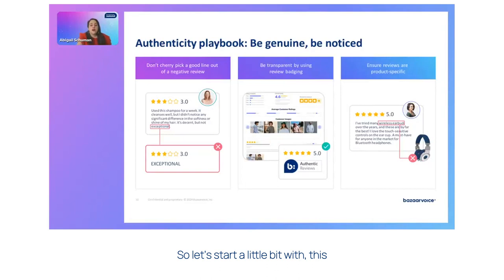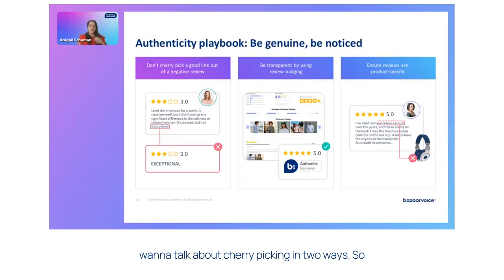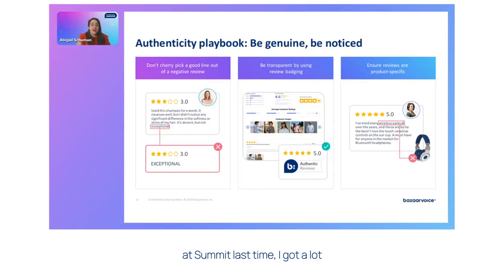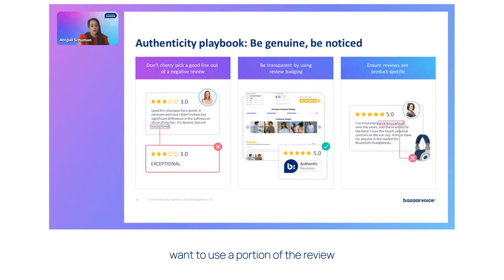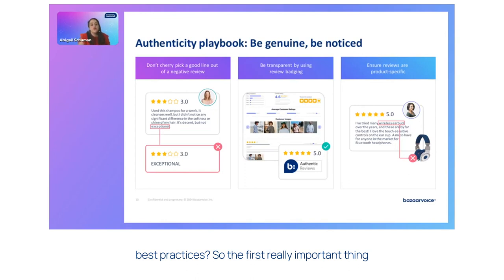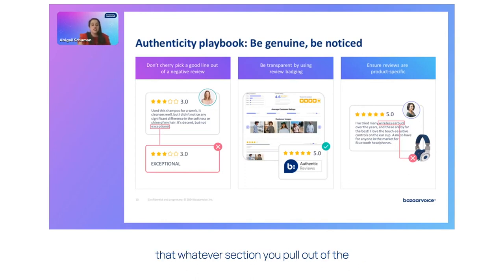Let's start with this first point: don't cherry pick a good line out of a negative review. I want to talk about cherry picking in two ways. The first one is snippets — where you want to use a portion of a review in a different location. The first really important thing about snippets is you need to make sure that whatever section you pull out of the review is representative of the whole review.